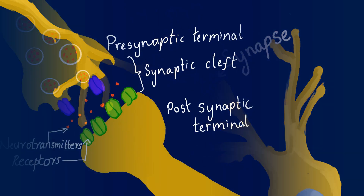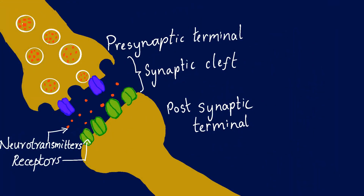There are three main parts of the synapse: the pre-synaptic ending that contains neurotransmitters, the post-synaptic ending that has receptor sites for neurotransmitters, and the space between the pre-synaptic ending and the post-synaptic ending.